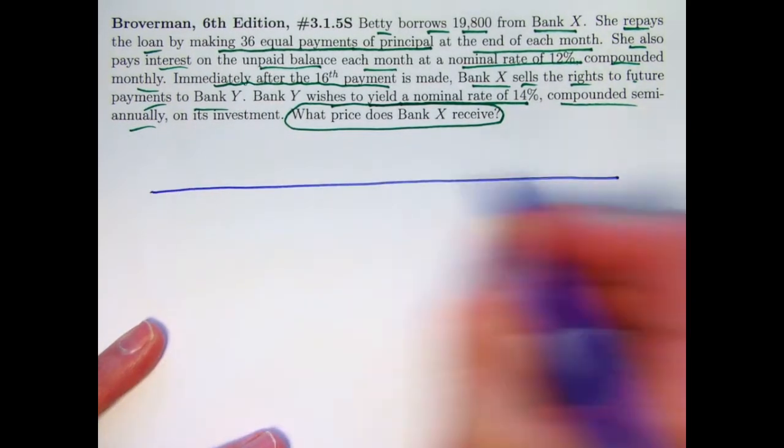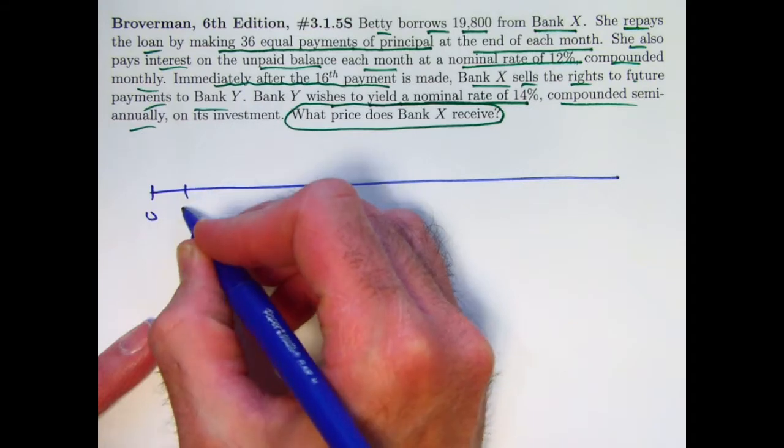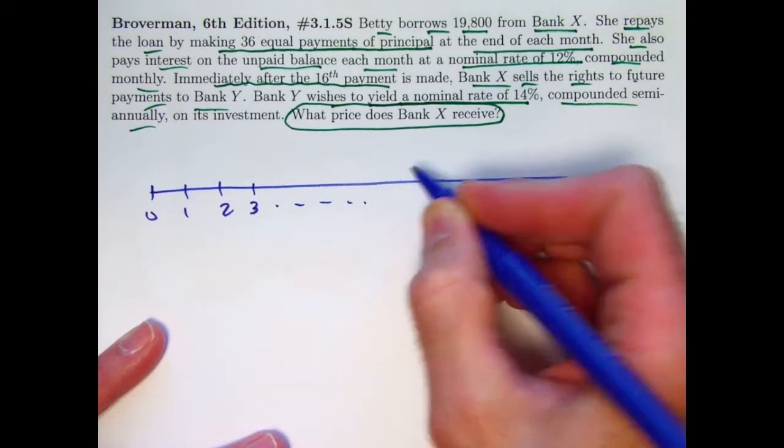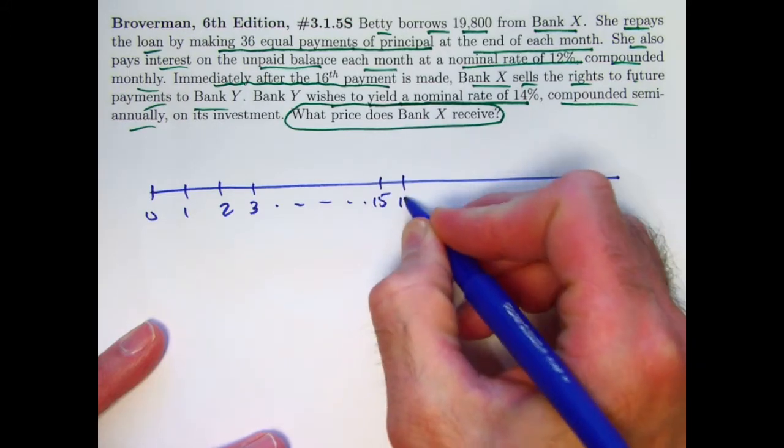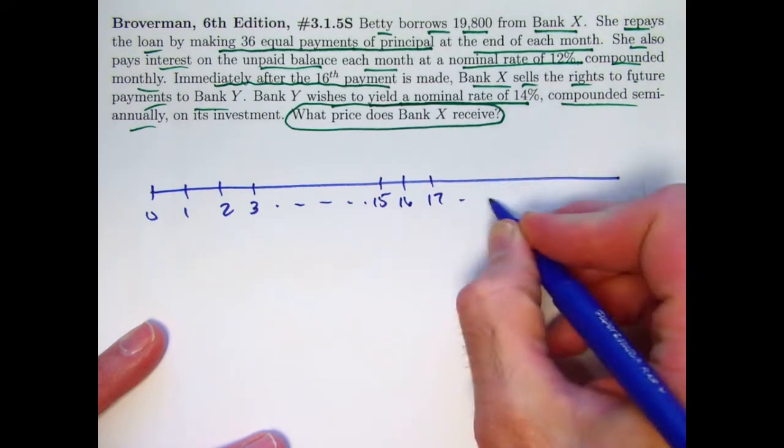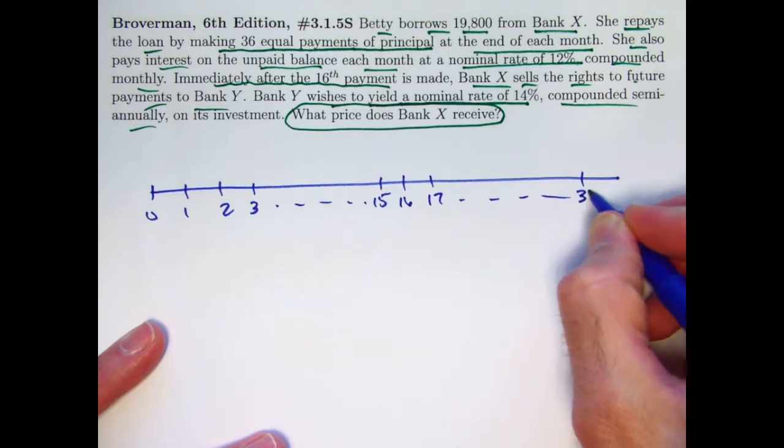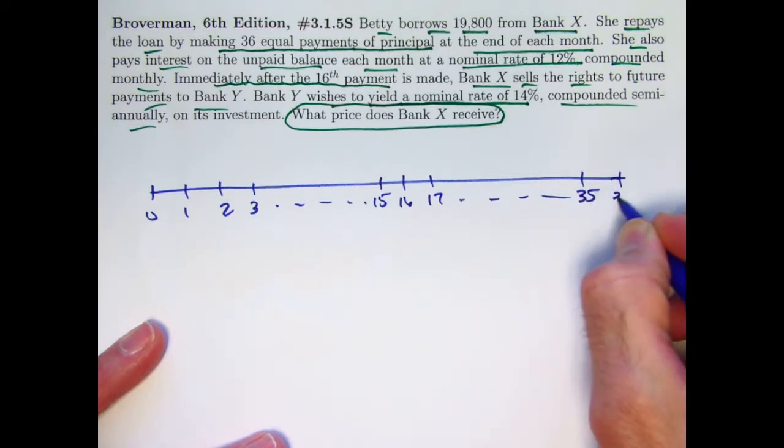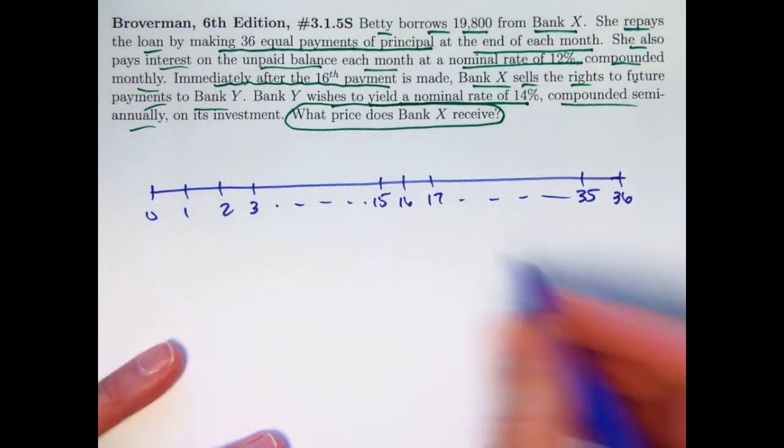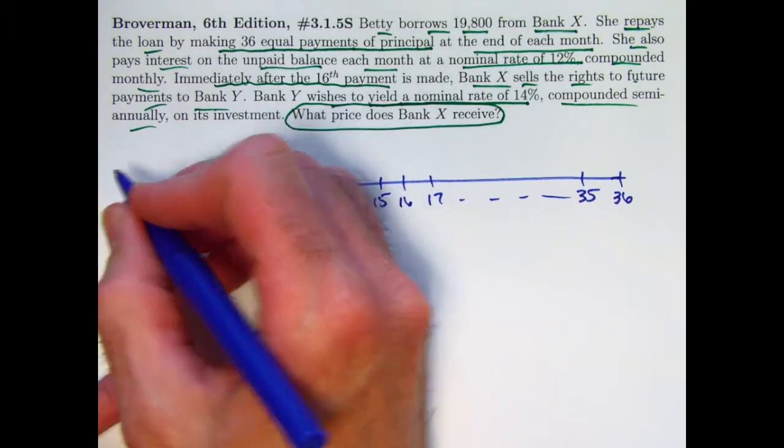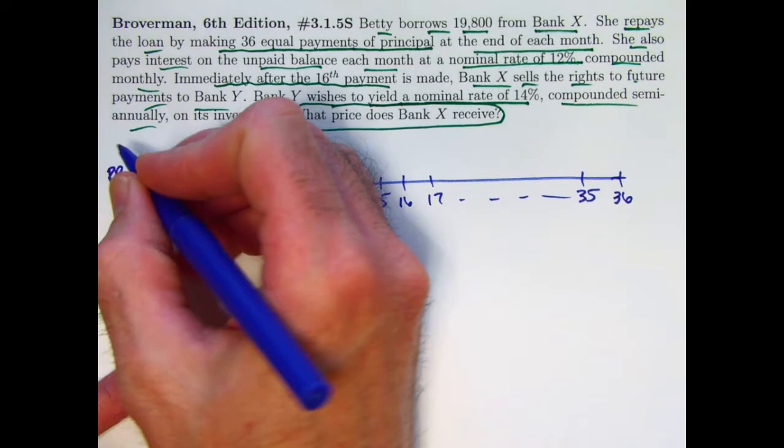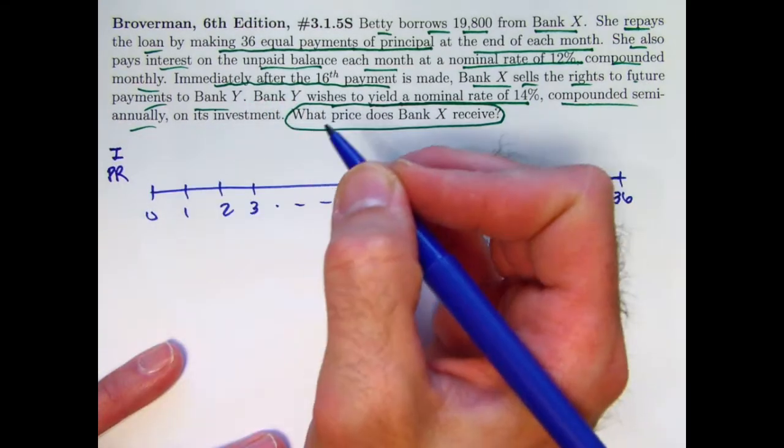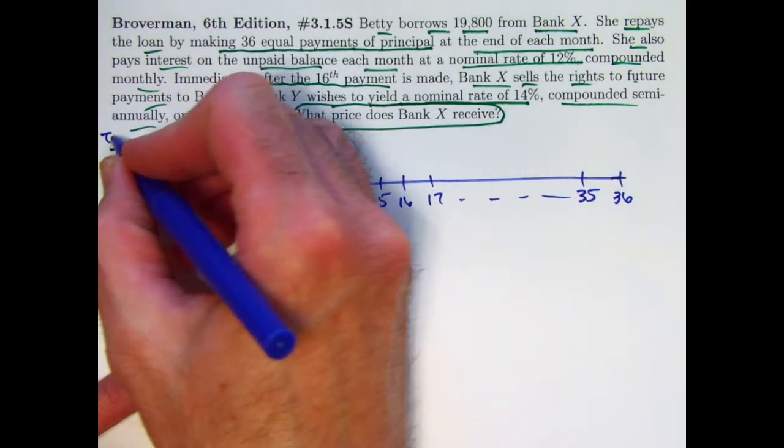So our timeline here is going to consist of months. Might be good to put, say, the 15th, 16th, and 17th months here. We go for 36 months, that's three years. Let's separate the total payments into the principal reduction component PR, the interest component, and I guess I'll put the total up here.